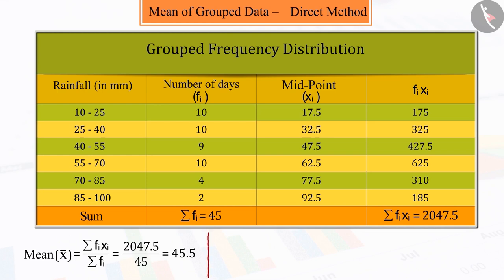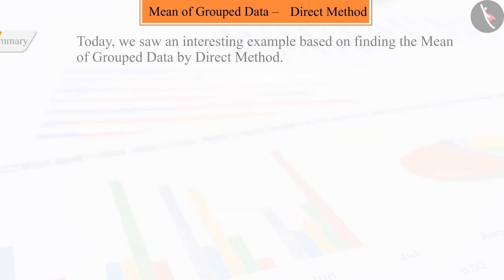So, we can say that the mean of rainfall occurring in 45 days is 45.50 mm.